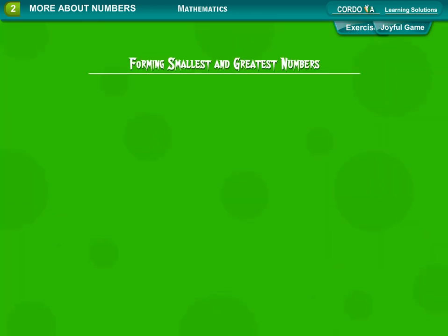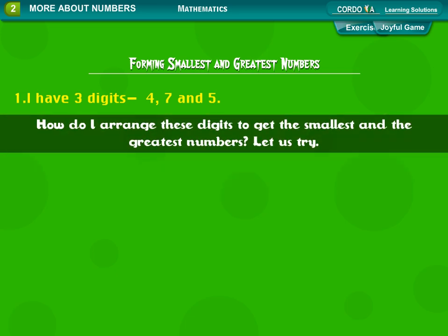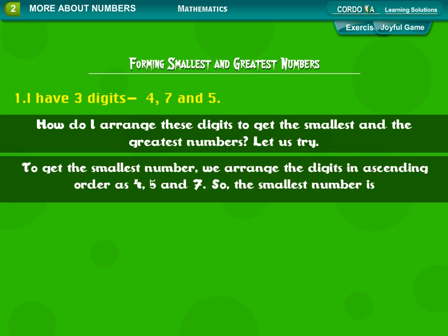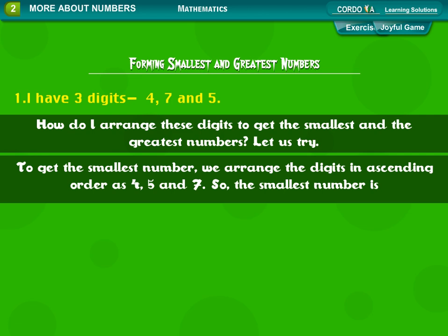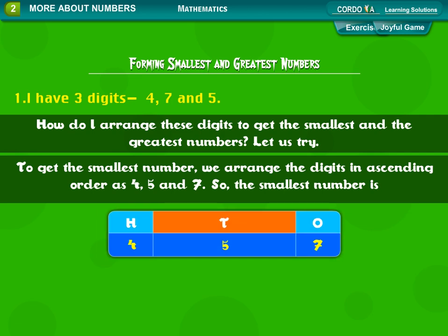Forming smallest and greatest numbers. I have three digits: 4, 7, and 5. How do I arrange these digits to get the smallest and the greatest number? Let us try. To get the smallest number, we arrange the digits in ascending order as 4, 5, and 7. So the smallest number is 457.